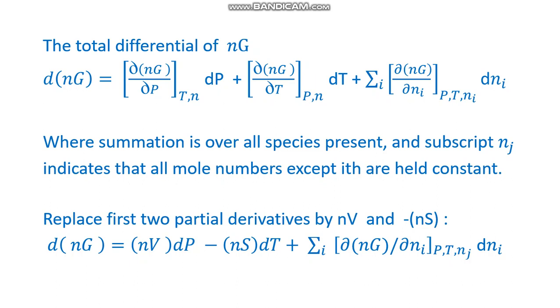The sigma i is written for all the mole numbers of the species. The summation is over all species present, and the subscript nj indicates that all mole numbers except i are held constant.